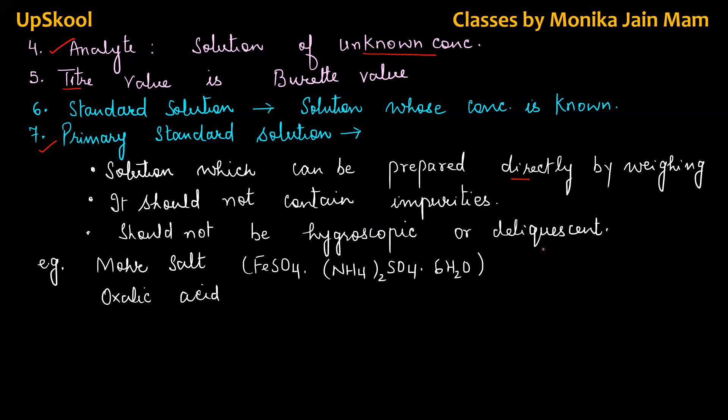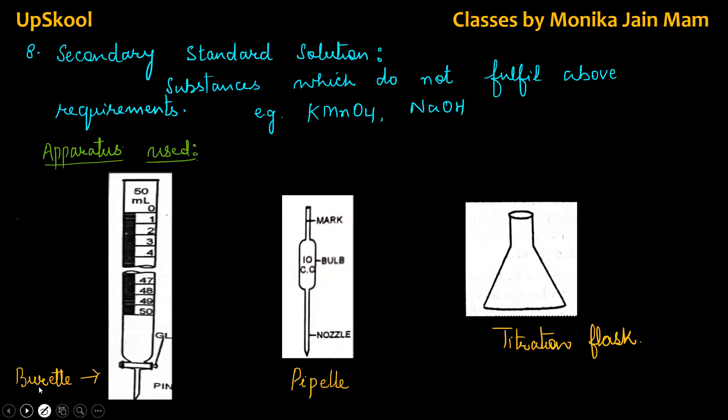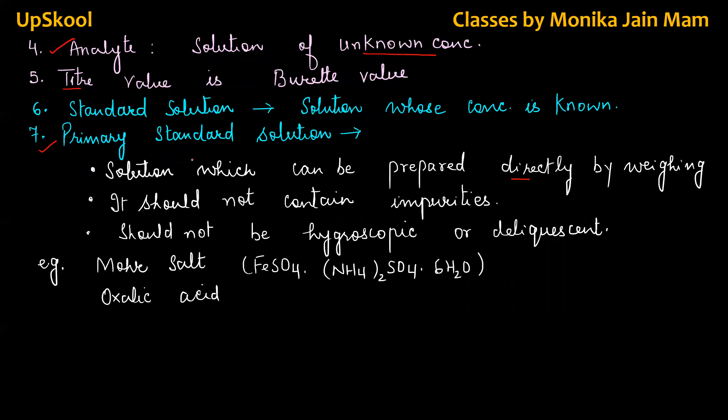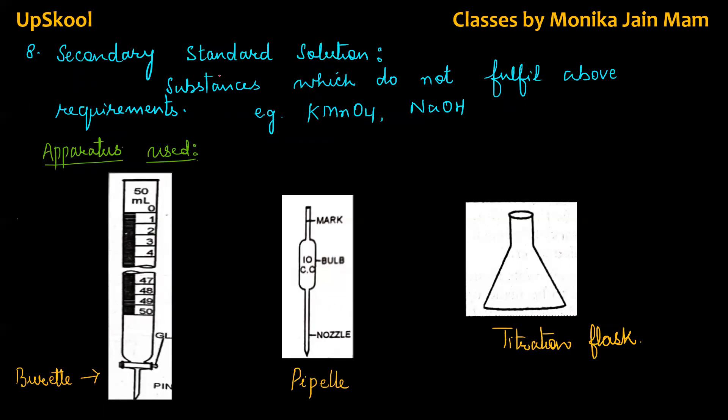Otherwise its molarity will change. For example, mohr salt, this is its formula, oxalic acid, these are two examples of primary standard solution. Now secondary standard solution, the substances which do not fulfill above requirements, means they may contain impurities, they may not be highly soluble in water and they may absorb moisture, so its molarity is not fixed, it is variable like KMnO4, sodium hydroxide. So now in titration what we do, one solution is primary solution, primary standard solution, from its molarity, we are going to determine molarity of secondary standard solution. This is purpose of volumetric analysis.